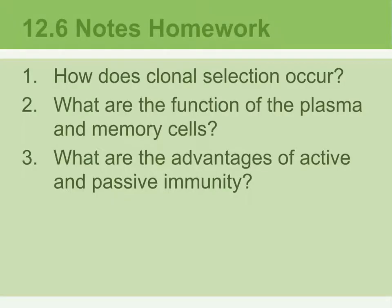12.6 notes homework. Number one: how does clonal selection occur? Number two: what are the functions of plasma cells and memory cells? Number three: what are the advantages and disadvantages of active and passive immunity?